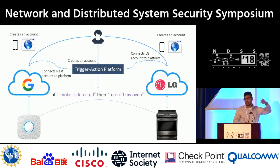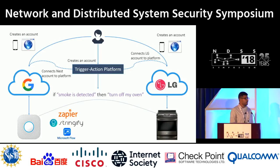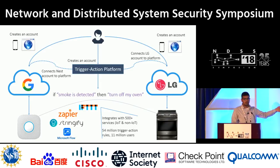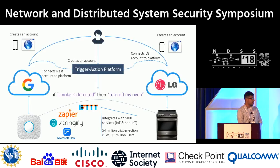Here is one example: if smoke is detected, then turn off my LG oven. This has broken down the silo, and I feel this is a good definition of what the internet of things is supposed to be doing. There are many such platforms — a whole industry surrounding trigger action platforms. The canonical example is known as IFTTT, or 'if this then that.' It has more than 500 IoT and non-IoT services, millions of users, and millions of individually created trigger action rules.